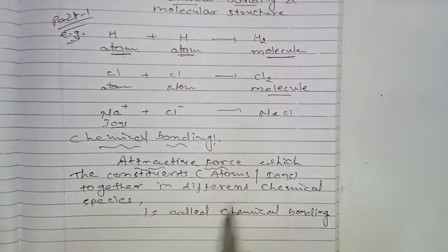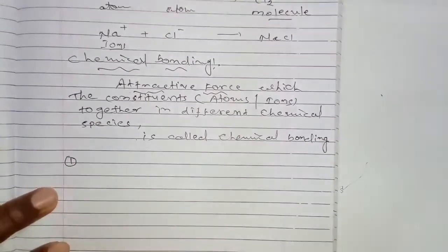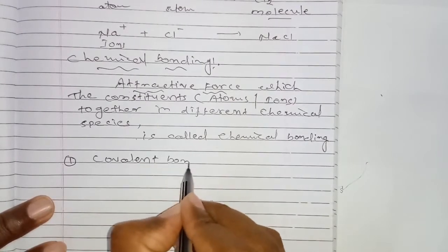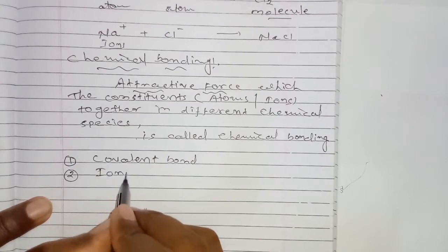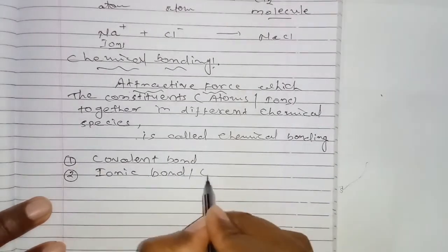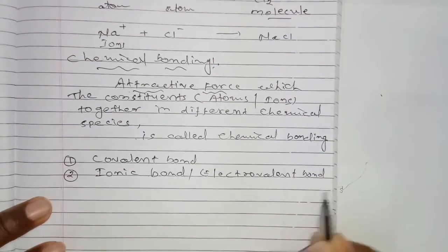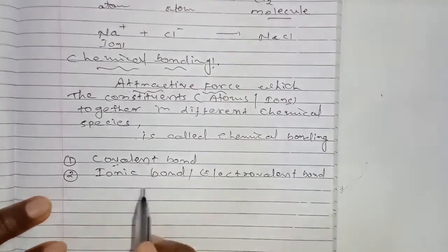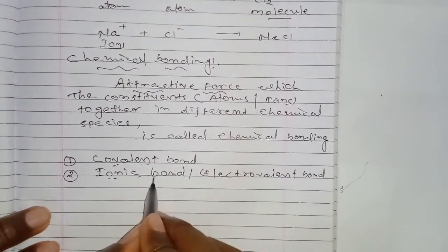The attractive force is very important. There are different types of chemical bond. Number one: covalent bond. Number two: ionic bond, also named electrovalent bond. By sharing of electrons the covalent bond is formed. By transferring of electrons from one atom to another atom, ionic bond is formed.